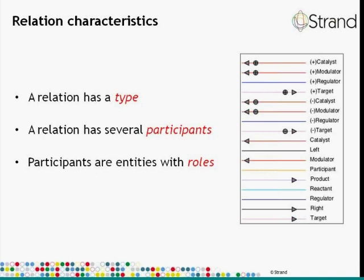To summarize: a relation has a type and several participants. By participants we mean entities which have a role specific to that particular relation. The different types of roles depicted in Avadis NGS pathway views include catalysts, modulators, regulators, etc. Not all of these roles are applicable to all relation types — for instance, in a metabolism you may have a catalyst, whereas in a binding you may not have a target.